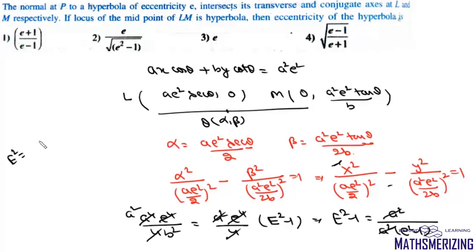We can write capital E squared as 1 upon (e squared minus 1) plus 1. So the value of capital E is e upon square root of (e squared minus 1), and that is option number 2.